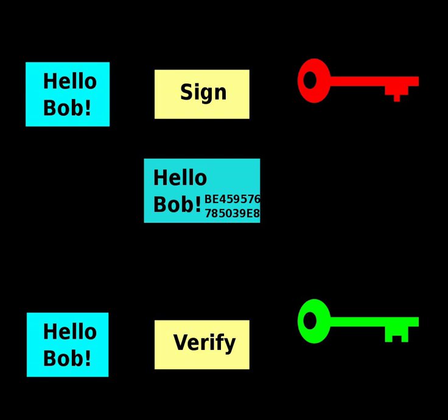If the smart card is stolen, the thief will still need the PIN code to generate a digital signature. This reduces the security of the scheme to that of the PIN system, although it still requires an attacker to possess the card. A mitigating factor is that private keys, if generated and stored on smart cards, are usually regarded as difficult to copy, and are assumed to exist in exactly one copy. Thus, the loss of the smart card may be detected by the owner and the corresponding certificate can be immediately revoked.